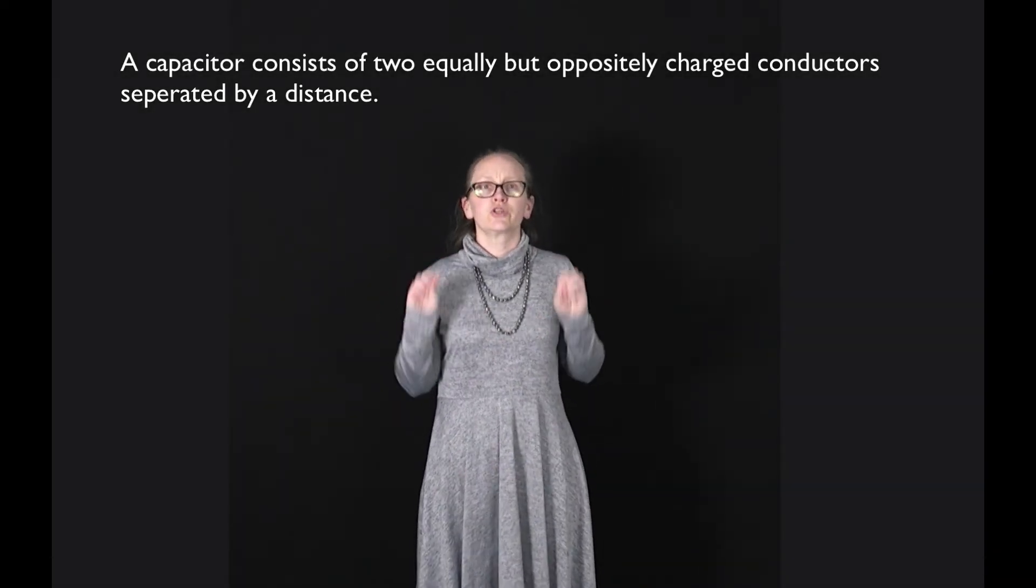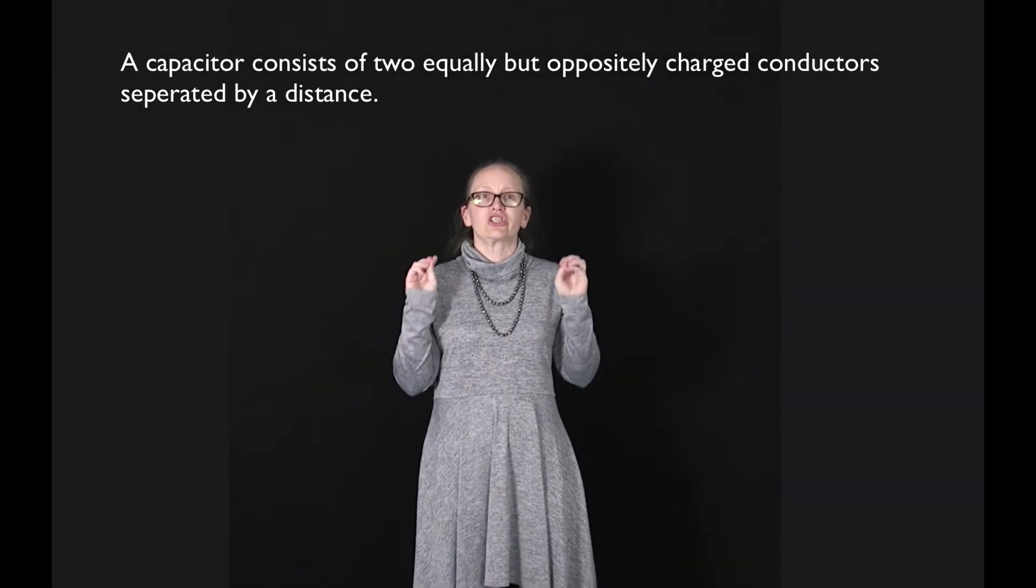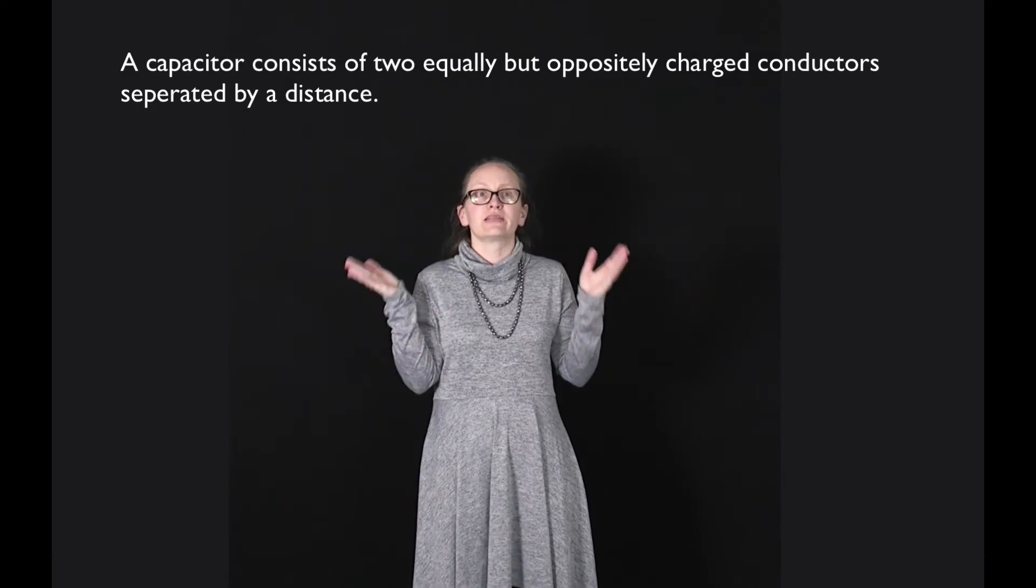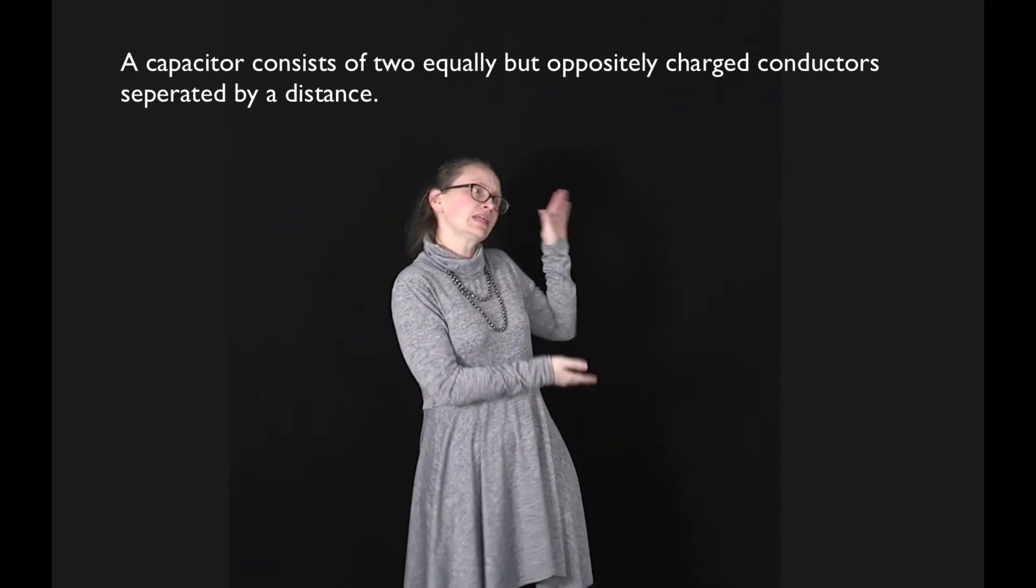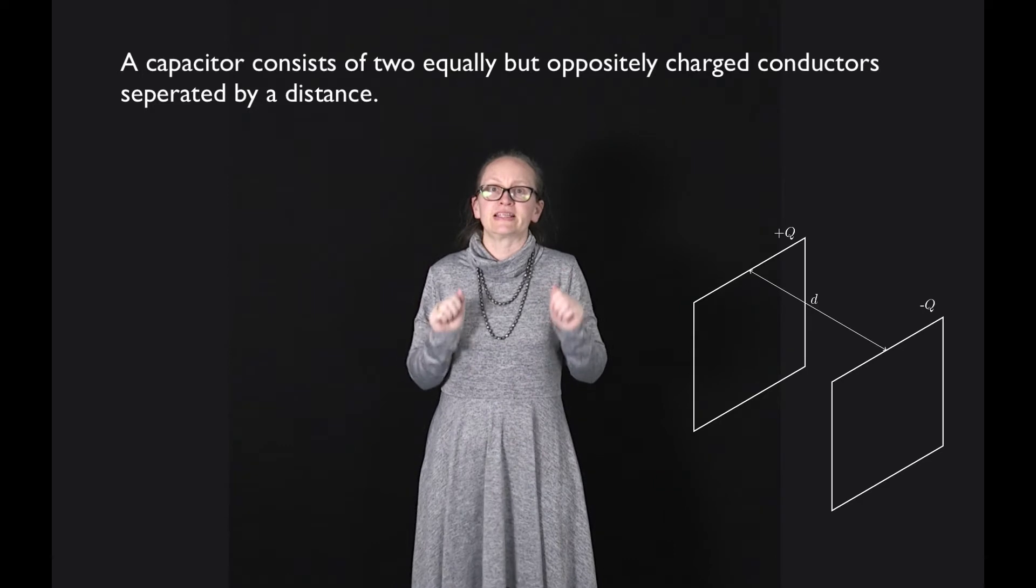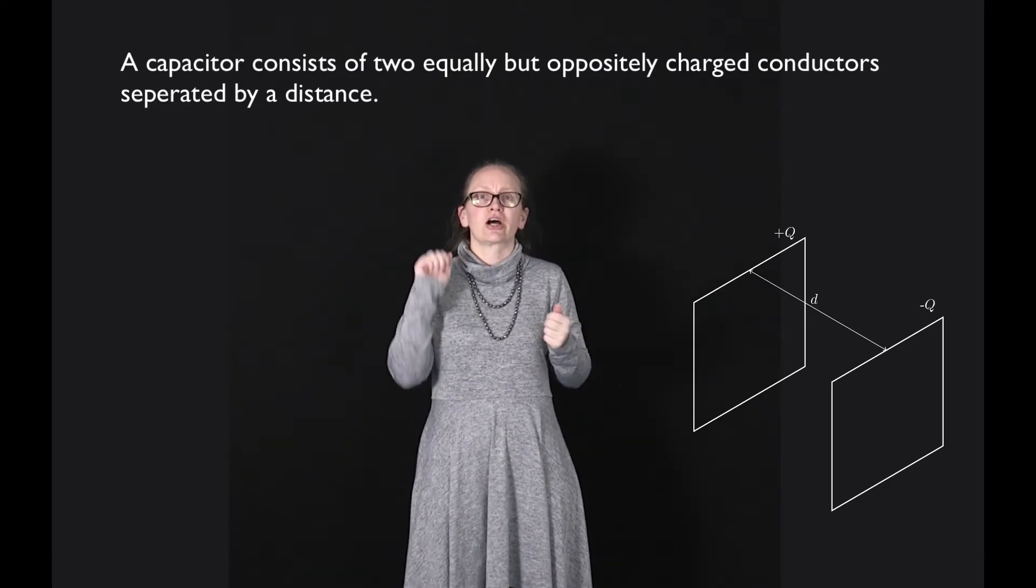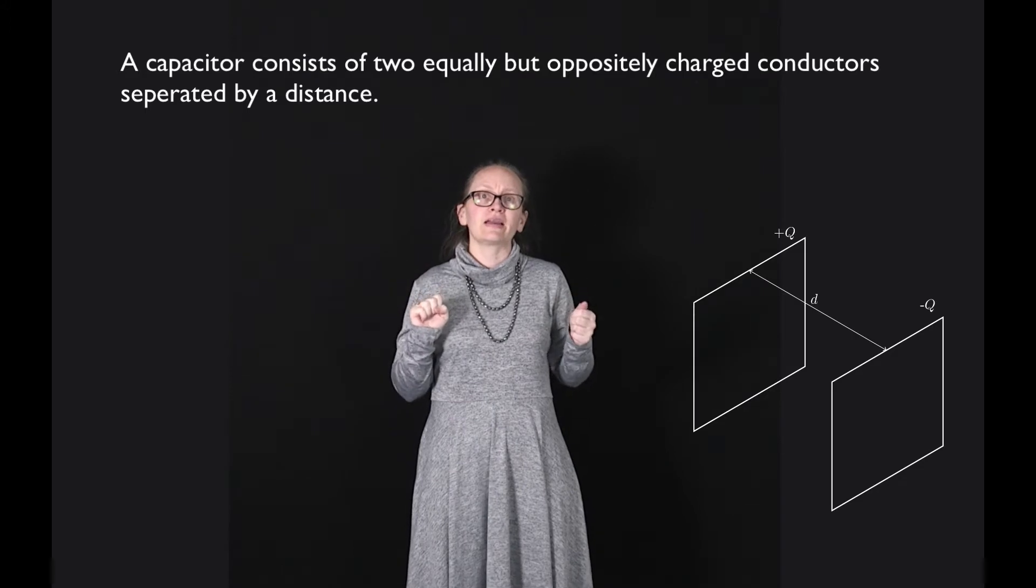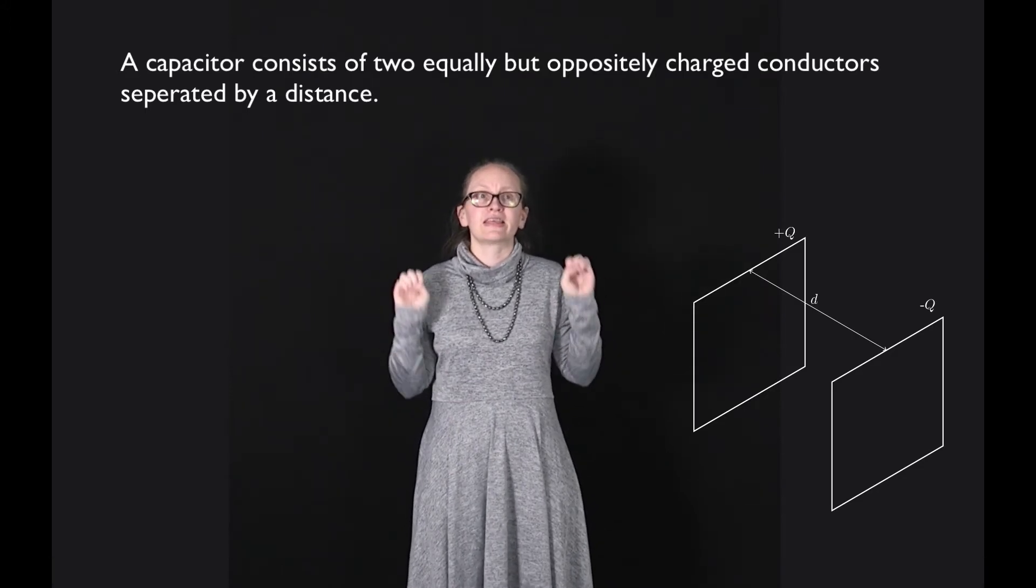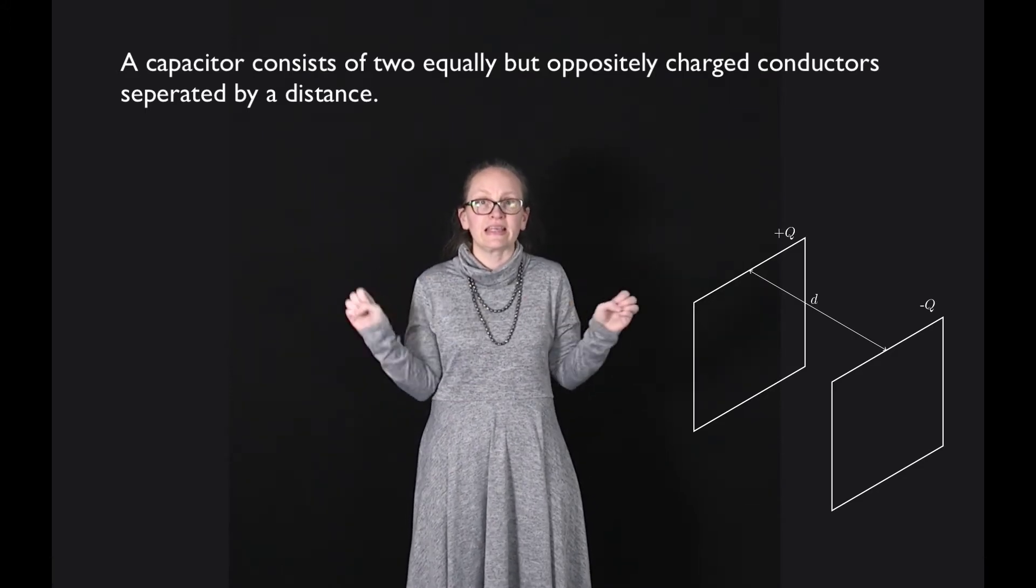A capacitor consists of two equal and oppositely charged conductors separated by a distance. This figure shows a very basic capacitor, a parallel plate capacitor. One of the plates has a charge plus Q, the other plate has a charge minus Q, and they're separated by a distance d.